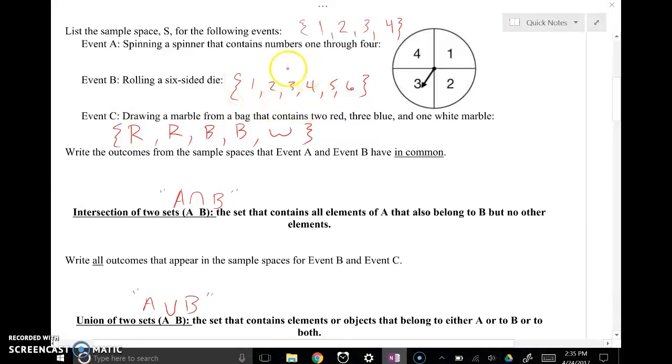1, 2, 3, and 4 showed up twice. So that would be what they have in common: 1, 2, 3, and 4.